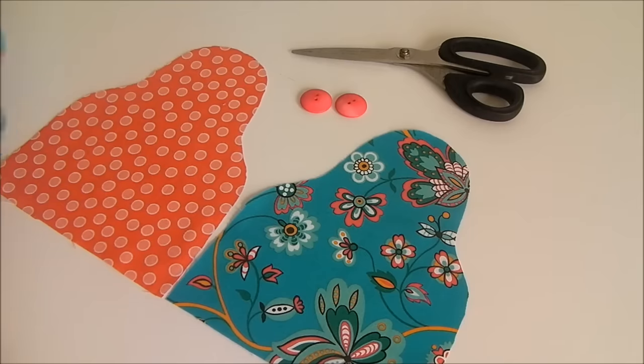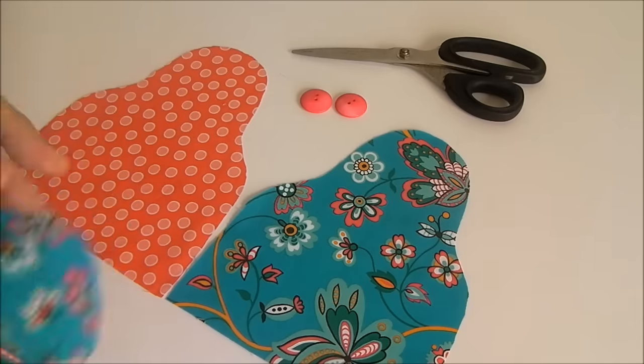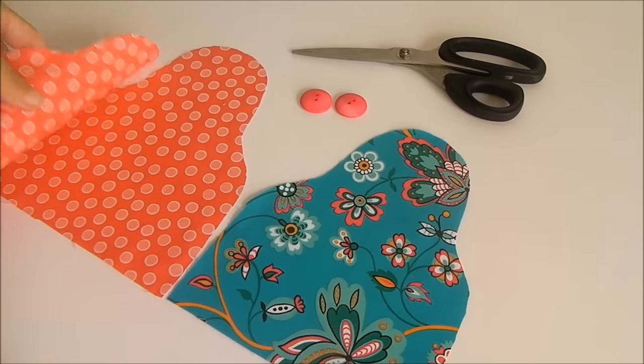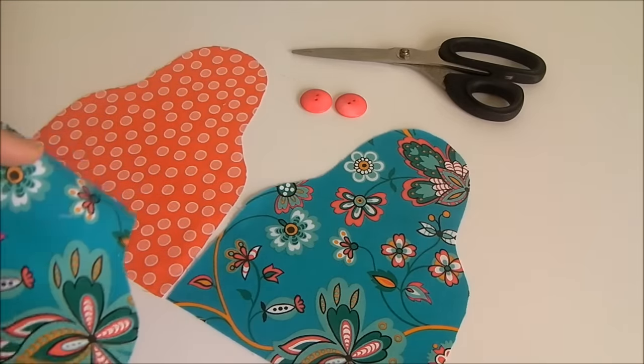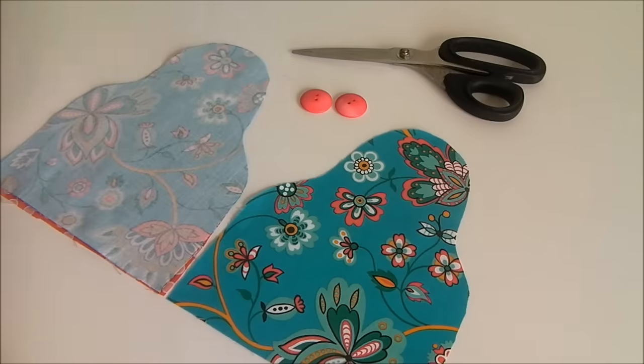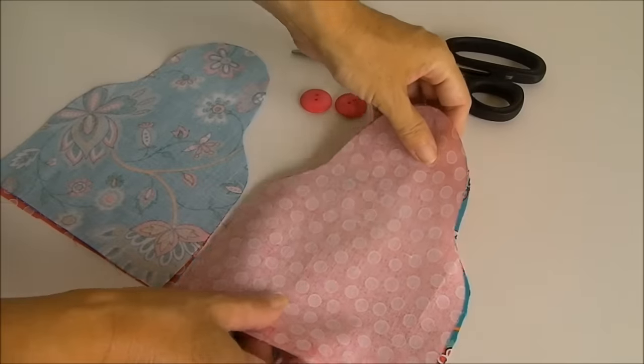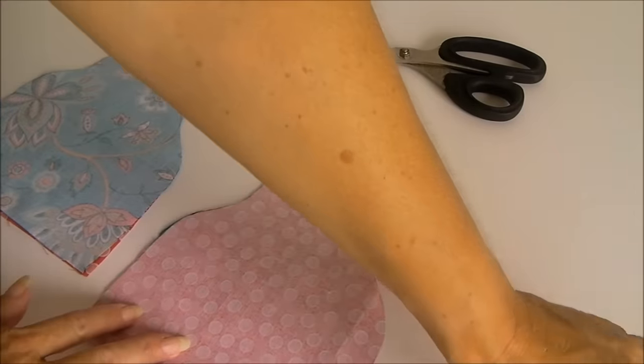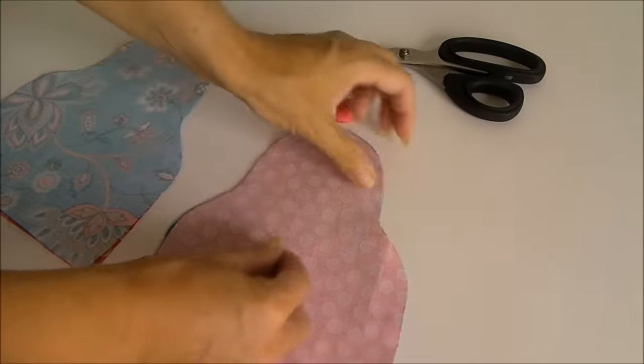So I've cut out my four pattern pieces and I'm just going to layer them now right sides together. You could, if you have two like this, you could put those two together and two pink ones together, but I'm going to make matching ones. So I'm going to add a pink and a blue and then a blue and a pink. And if we match these right sides together and just add in a few pins around the outside.